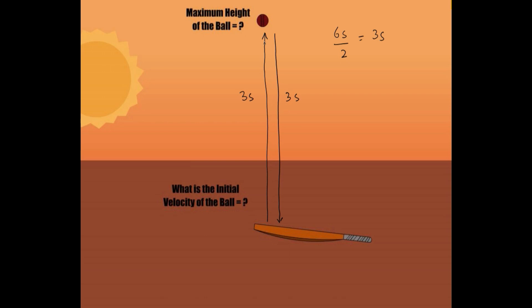As the ball is moving upward, it is moving against the field of gravity. So the gravitational acceleration in that case is equal to negative 10 meters per second squared, and the time the ball took to reach the maximum height is 3 seconds. The ball has some initial velocity, but when it reaches the maximum height it stops — it is at rest position — so its final velocity equals 0 meters per second.